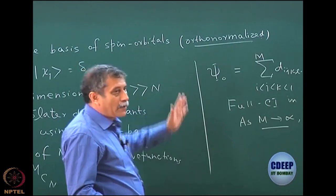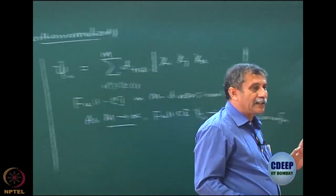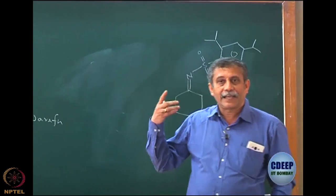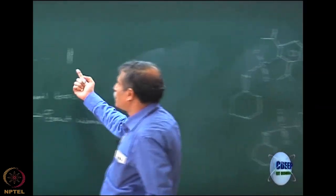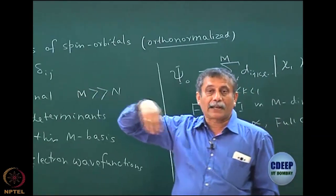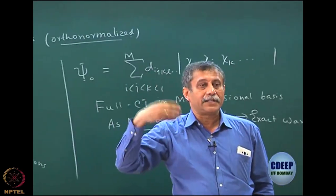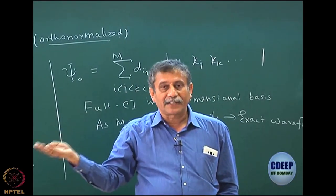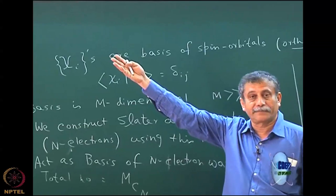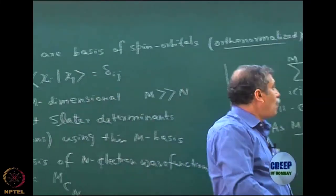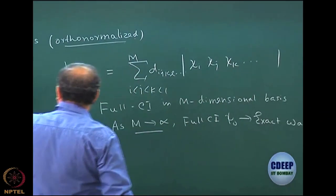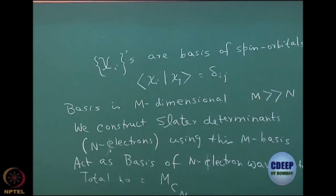If the Hamiltonian is non-interacting, a single determinant should be an exact function, provided it is an eigenfunction of the one-particle operator. By clever choice of basis, I can make all the determinants exact functions for a non-interacting Hamiltonian — the clever choice being that these basis functions must be eigenfunctions of the one-particle operator. Then one of them would be the ground state, and others will be excited states.